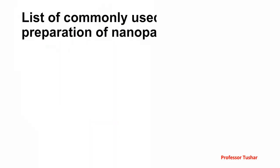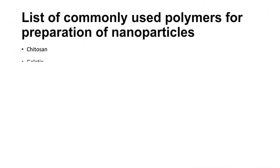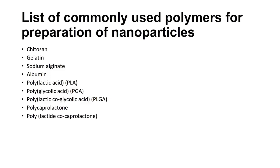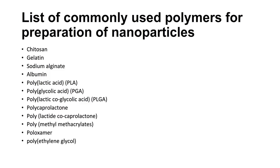Commonly used polymers for preparation of nanoparticles include: Chitosan, Gelatin, Sodium alginate, Albumin, Polylactic acid, Polyglycolic acid, Polylactic-co-glycolic acid, Polycaprolactone, Poly-lactide-co-caprolactone, Poly-methylmethacrylates, Poloxamer, and Polyethylene glycol.